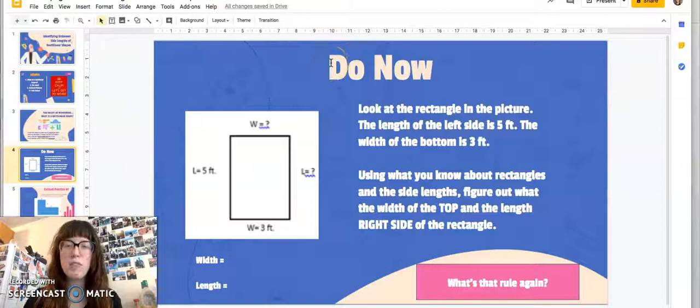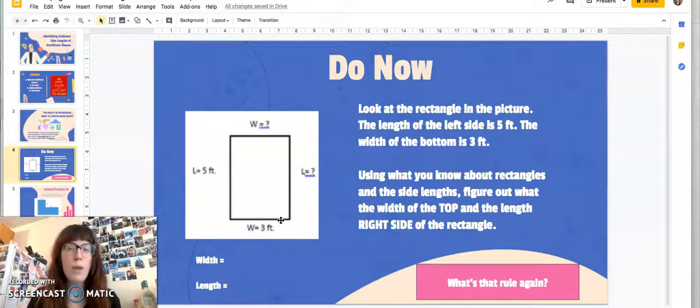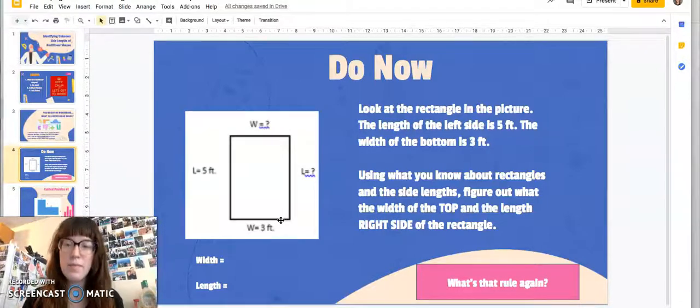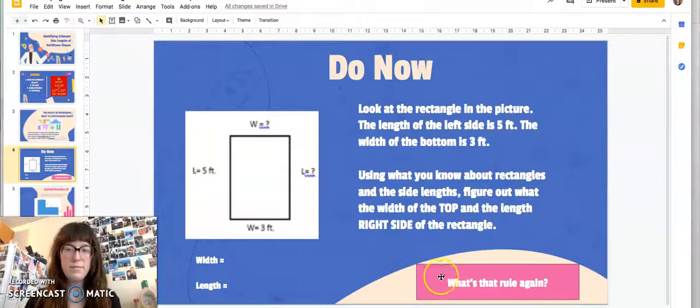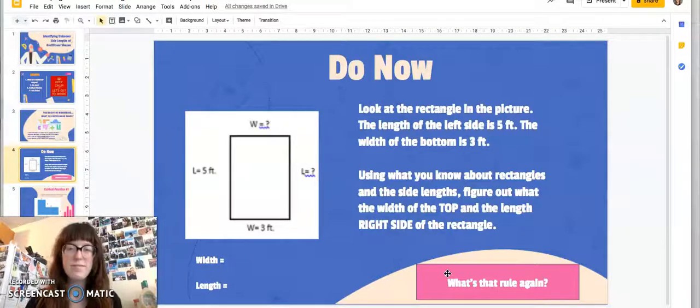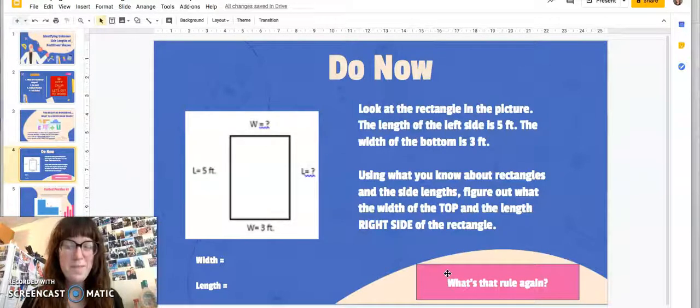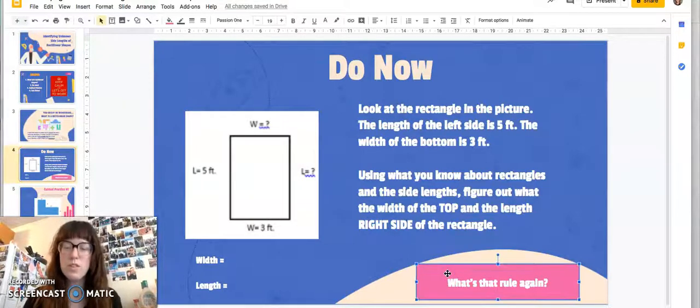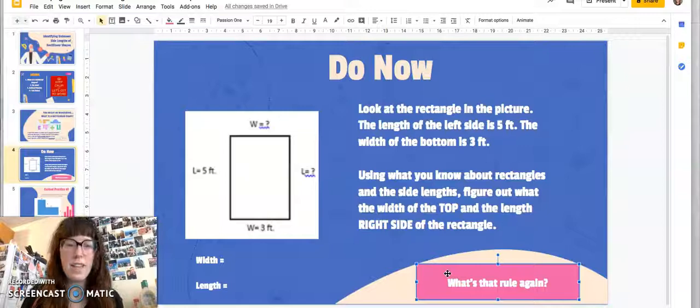So for our do now, I want you to look at the rectangle in this picture. The length of the left side we can see is five feet. The width of the bottom is three feet. So using what you know about rectangles and side lengths, figure out the width of the top and the length of the right side of the rectangle. I'll give you a second to think before we go over the rule. Do you have it figured out? If you don't, that's okay. We're going to go over the rule. So what's the rule for finding the missing side lengths of a rectangle?